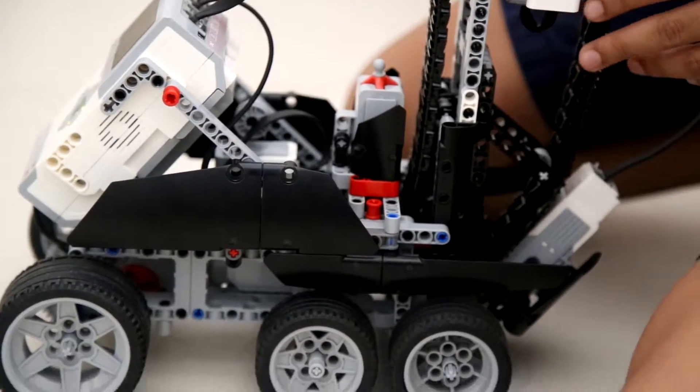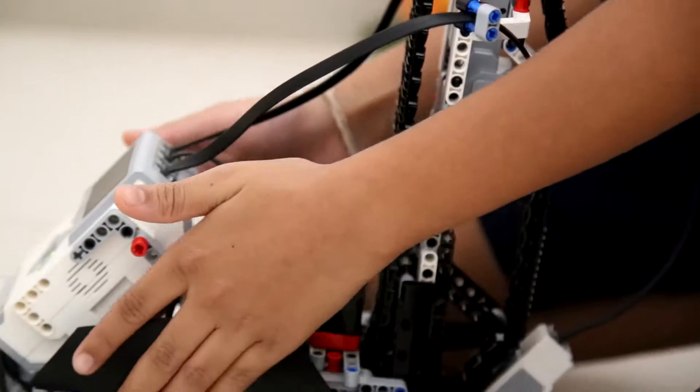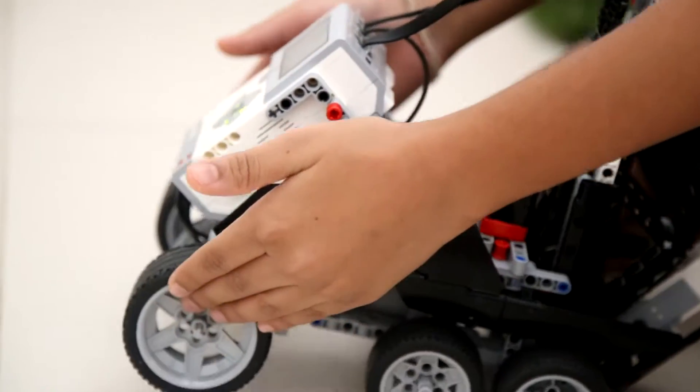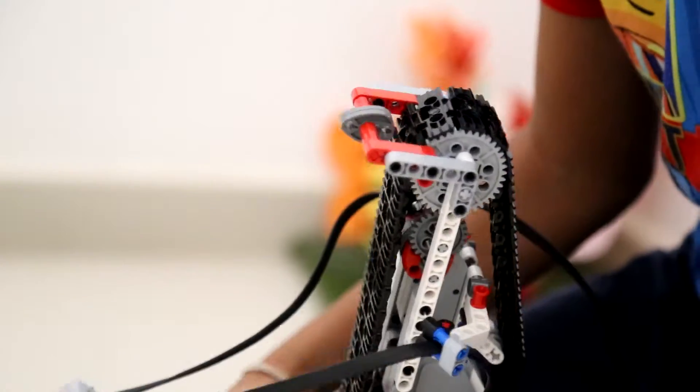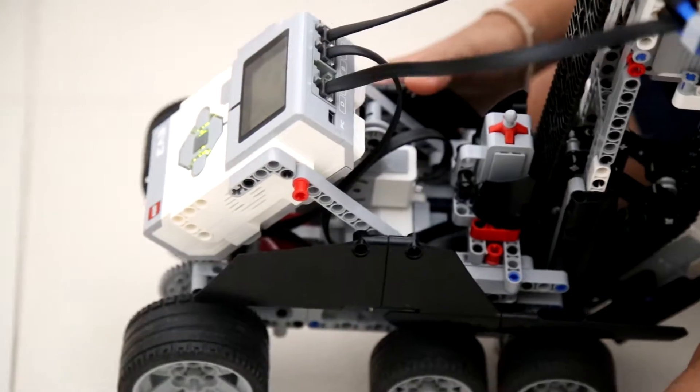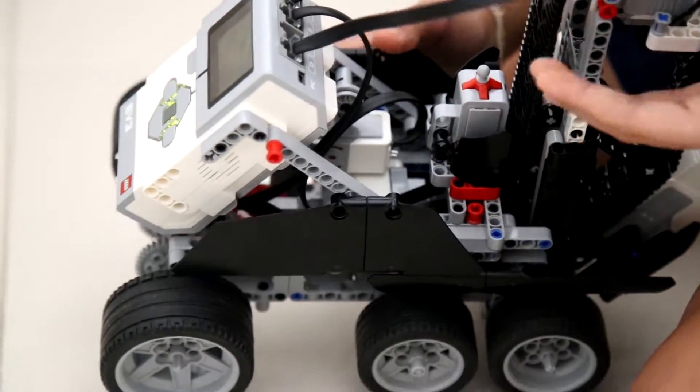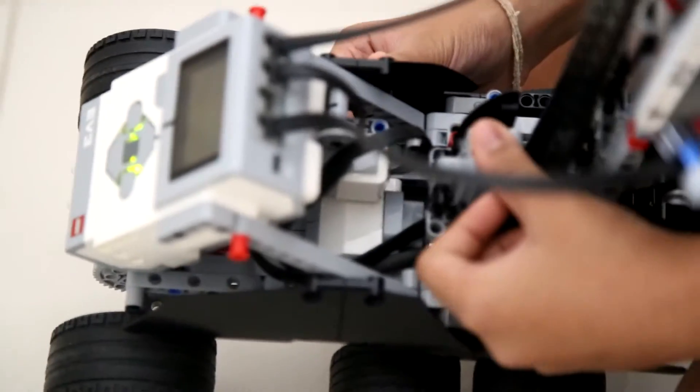This is the chain which if it starts working this thing can go up. Now it needs some support from the front because this is very heavy. Then it has another touch sensor over here so that it knows how much to go up and not to go a lot up. So it has a touch sensor so if it touches it will stop.